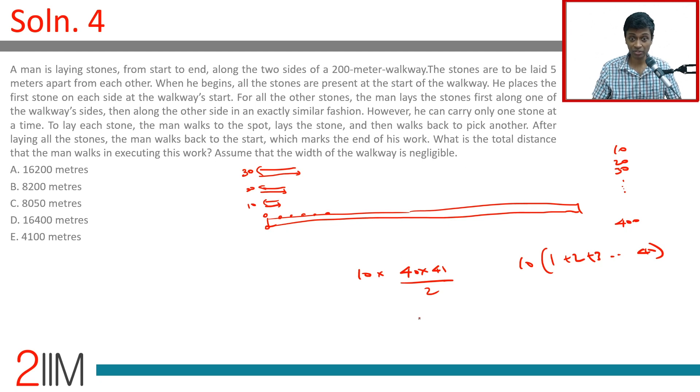So, remember, this is the question, the last statement is very crucial. Not the last statement, one statement in between. After laying all the stones, the man walks back to the start, which marked the end of his work. Because the last time he puts his 200 meter stone, you have to count for him coming back all the way here as well. That's also important, which is included when we count like this, but that is crucial to count that.